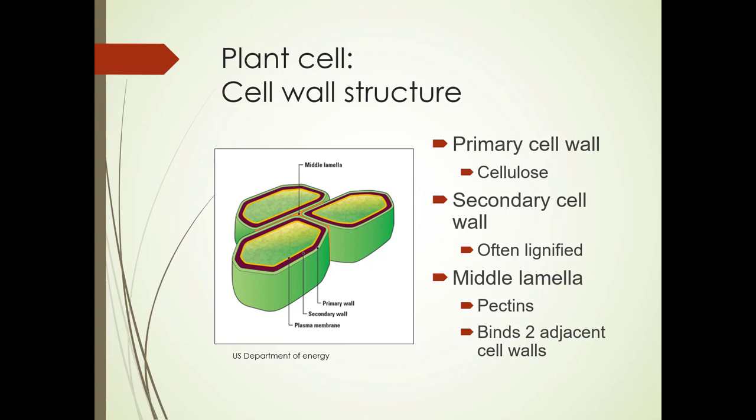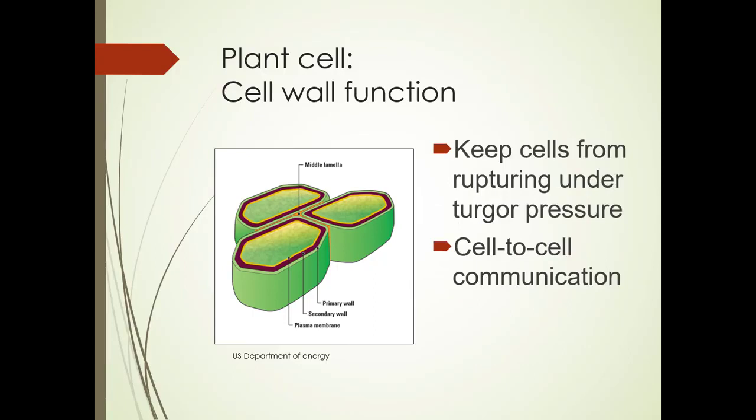Then we have the middle lamella, which is made up of pectins. It binds to adjacent cell walls. Cell walls keep the cells from rupturing under turgor pressure, and they're also responsible for cell-to-cell communication.